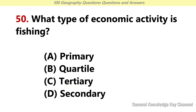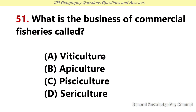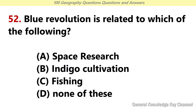What type of economic activity is fishing? Answer A: Primary. What is the business of commercial fisheries called? Answer C: Pisciculture. Blue revolution is related to which of the following? Answer C: Fishing.